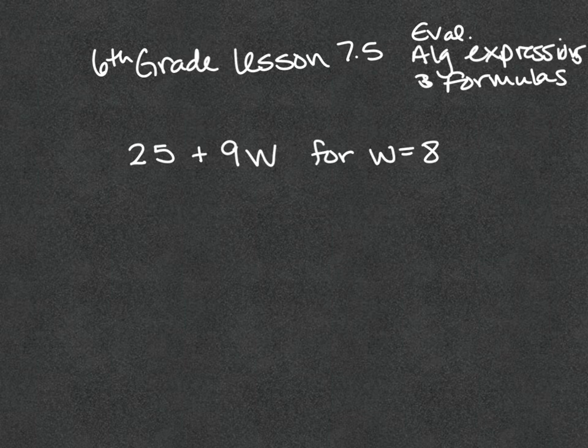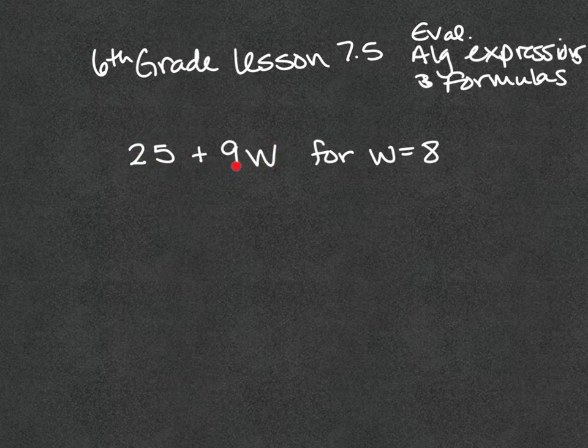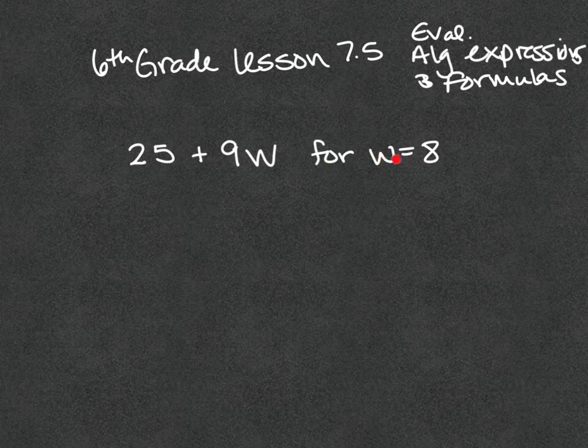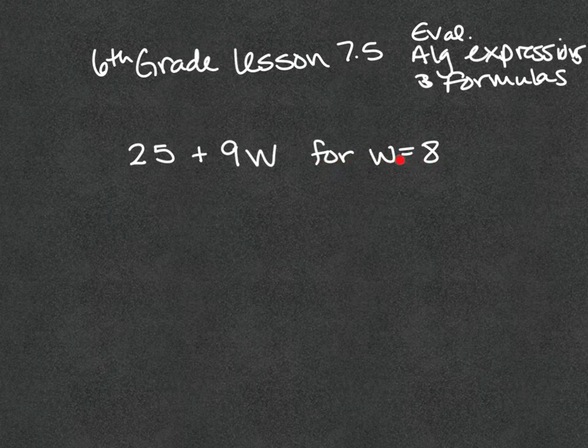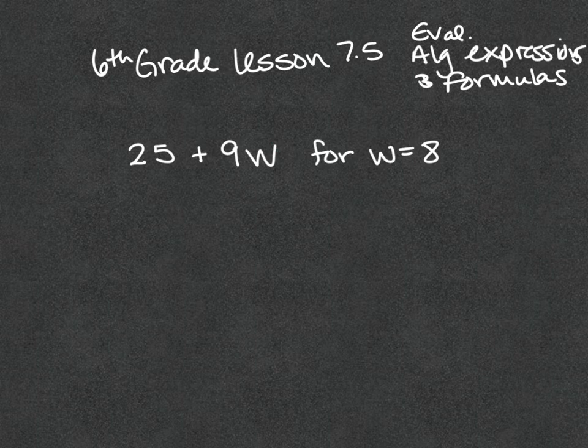So here's how it's going to look. They're going to give you this expression, 25 plus 9 times W. And we don't know what W is, so we can't calculate it until they say, by the way, W equals 8. So all you have to do is take this 8 and plug it in for the W. That's what I mean by plug and play.